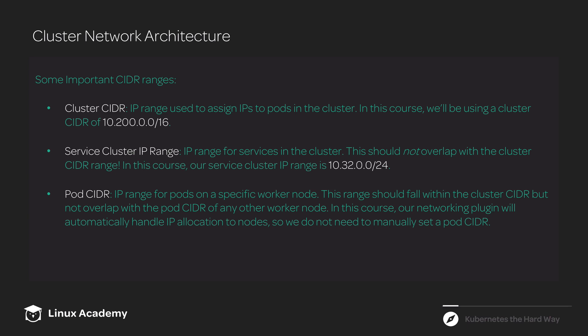We've actually used this cluster CIDR already when we were setting up some of our services. If you go back and look at the systemd unit file that we created for the kube-controller-manager service, you'll see a flag being passed in that says cluster CIDR, and it's setting that value equal to 10.200.0.0/16. The cluster CIDR is the IP range used to assign IP addresses to pods in the cluster — each pod is going to get its own unique IP address within that range.